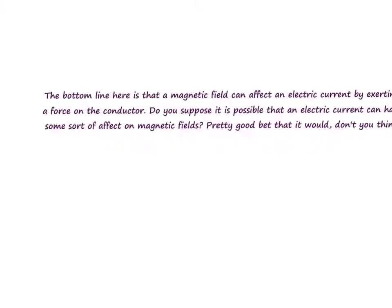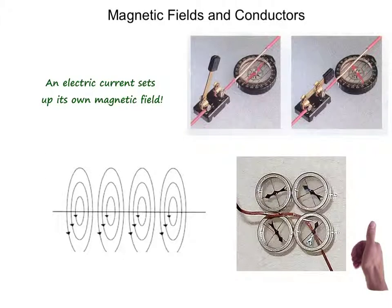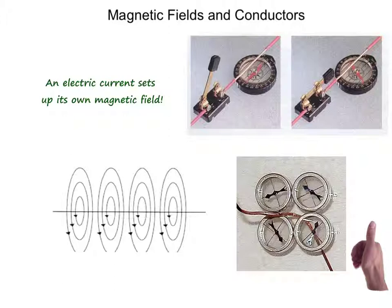The bottom line is that the magnetic field can affect an electric current by exerting a force on the conductor. So it should be possible that an electric current can also have some effect on magnetic fields. Back in the 19th century, a guy named Hans Christian Ørsted figured out that if he placed a compass next to a wire and then ran a current through that wire, the compass needle got deflected. He also found that if he reversed the direction of the current, the compass needle would swing around in the opposite direction. This was clear evidence that an electric current sets up its own magnetic field — a discovery that basically changed the world.